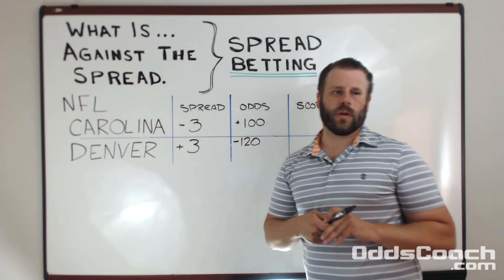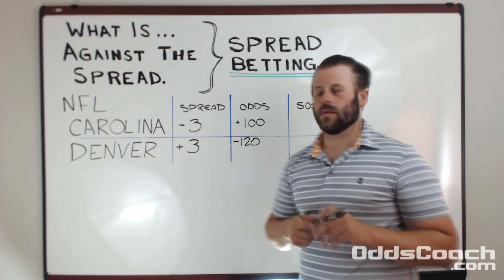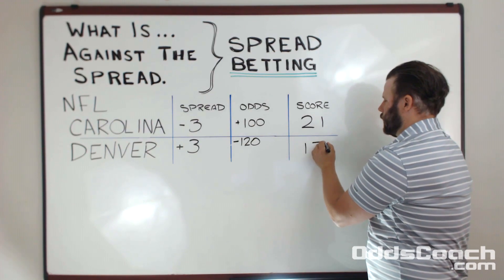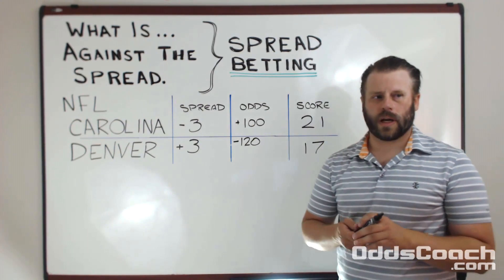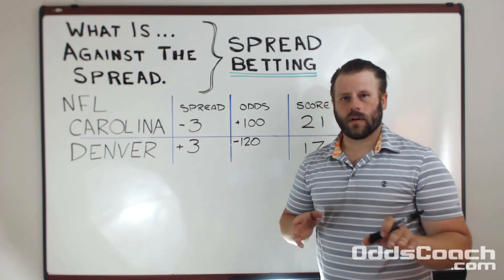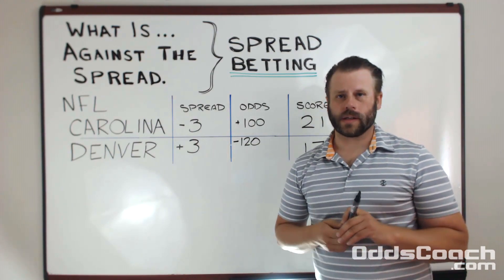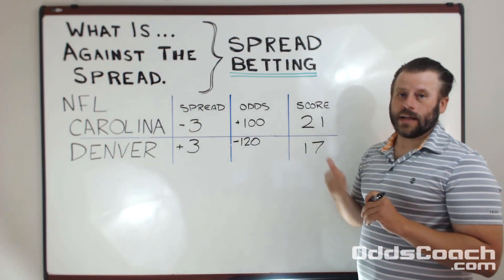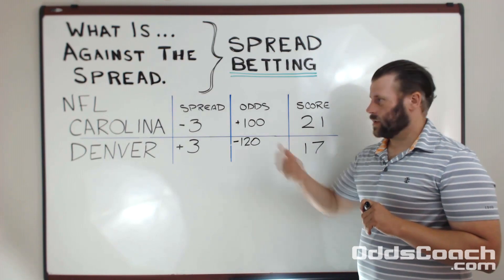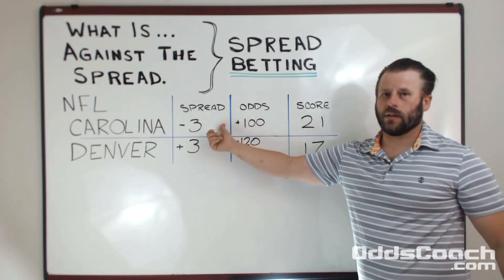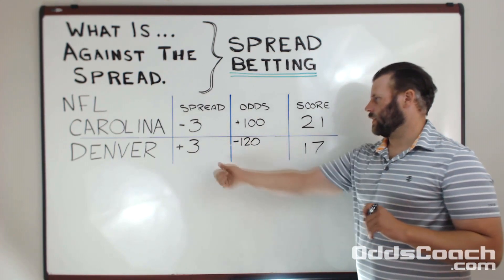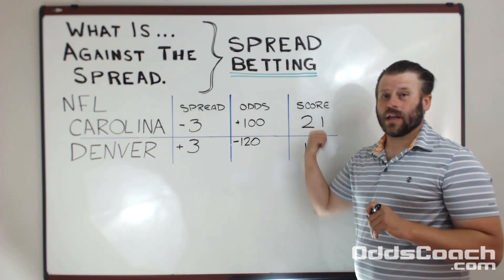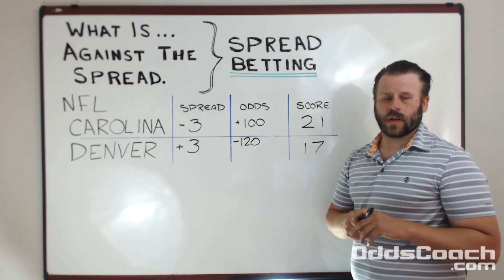So let's take this example and put some numbers up as scores to see the result. Let's say an outcome of 21-17. Carolina outright wins the game. But before we can evaluate that we have to subtract the three points should we have bet on Carolina. So that puts us down to 18-17, which still has Carolina winning, so you're going to win your bet on Carolina. To evaluate the Denver side, you just add three points to the 17, which gives you 20. You still lose the game 21-20, so that's a losing bet on Denver.